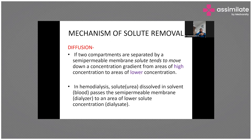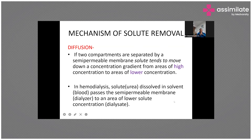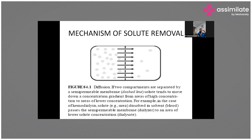The three principles involved in dialysis are diffusion, convection, and ultrafiltration. Diffusion is the movement of solutes from a high concentration gradient to a lower concentration gradient through a semi-permeable membrane. The key solutes include urea, creatinine, and phosphorus — all uremic toxins. Urea is the most studied solute in dialysis. It is dissolved in blood and passes through the dialyzer membrane from the high-concentration blood side to the low-concentration dialysate side.